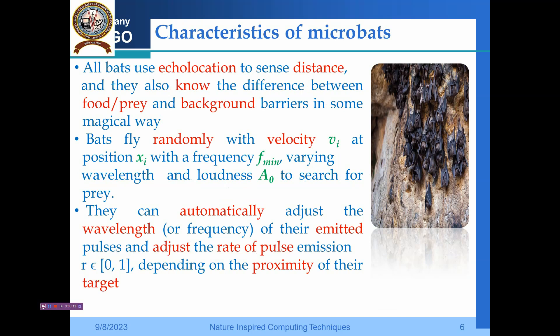Different species have different strategies. All microbats use echolocation to sense the distance, and they also know the difference between food prey and the background.